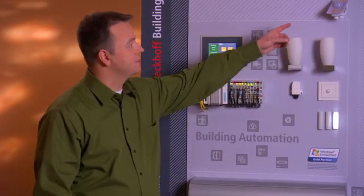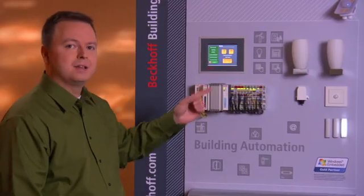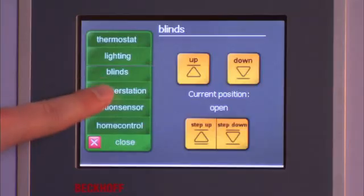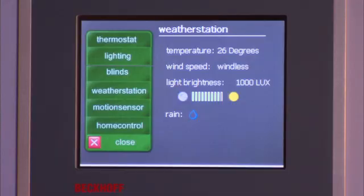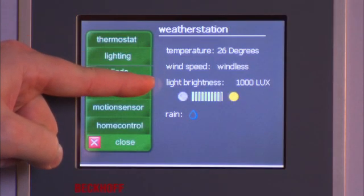Now, you may be wondering what this odd-looking device is up here. That's actually our weather station device. I can access the information coming in from that weather station device here on the touch panel as well. You can see it's telling me the temperature, the wind speed, and the brightness.